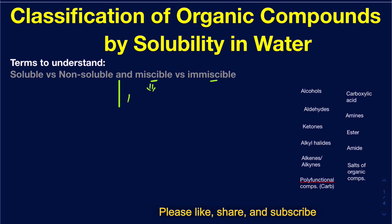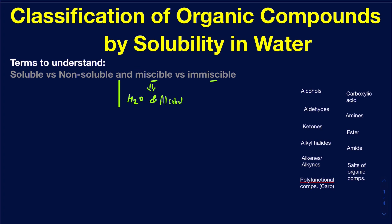A good example of miscible: when you add water and consuming alcohol together, you don't see them separating. They mix really well and make one uniform homogeneous mixture — that's what miscible means. An example of immiscible would be water and oil. When you mix water and oil, or even gasoline, they don't really mix because of their polarity differences, and they separate into two different layers.